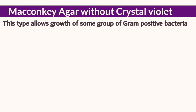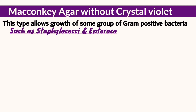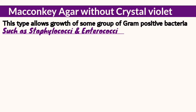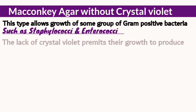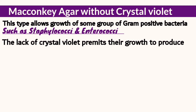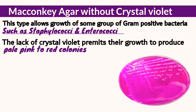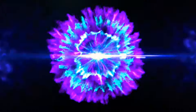Another modification is MacConkey agar without crystal violet. This media allows the growth of some gram-positive bacteria such as staphylococci and enterococci. The lack of crystal violet permits the growth of enteric gram-positive bacteria that produce pale pink to red colonies on MacConkey agar.